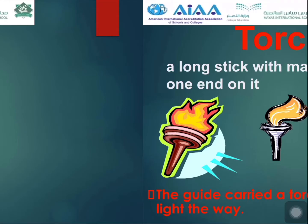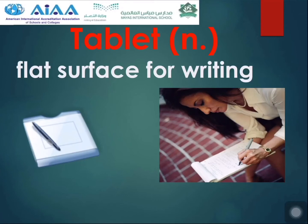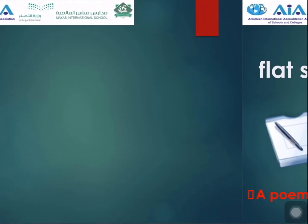Tablet — it's a flat surface for writing. Also, tablet can refer to the electronic device we use, like a laptop or to play games. For example: a poem was carved into the stone tablet. They make the stone flat and smooth to be a tablet, so others can come and write on it.